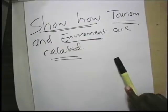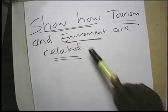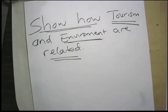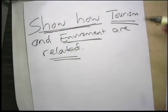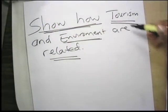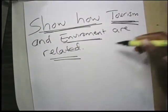As you get into the examination room, always read carefully the question. Take your time — give yourself minutes to read the question, and it's always good to underline the keywords. For example, here's a question: 'Show how tourism and environment are related.' You need to underline the keywords: 'show how,' then 'tourism' — that's your keyword.